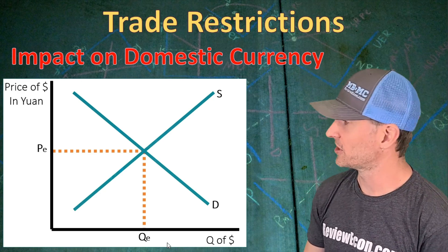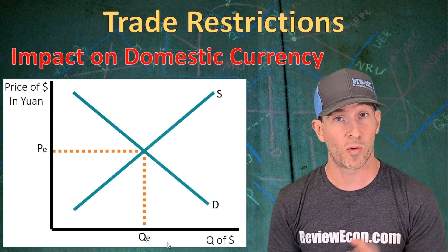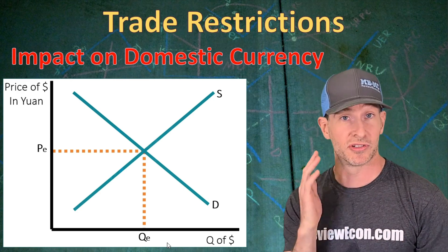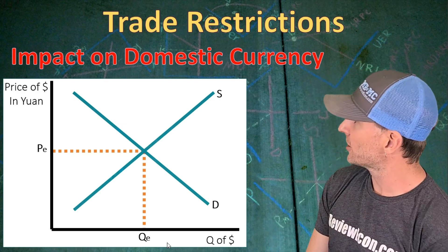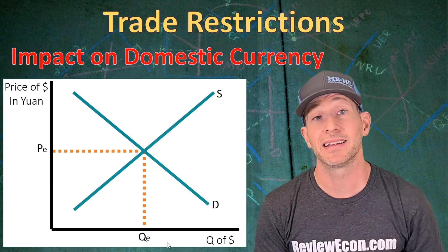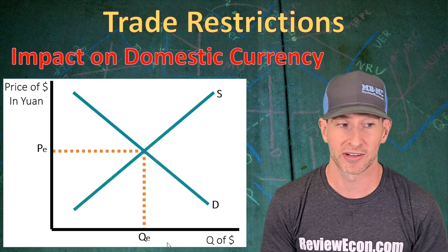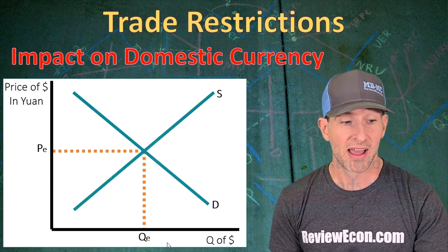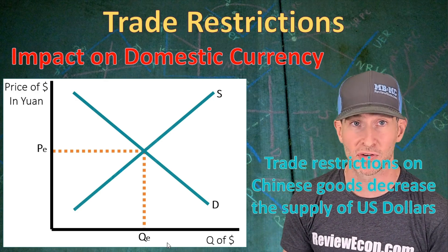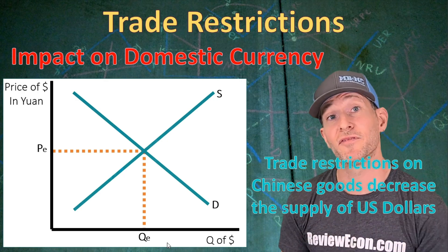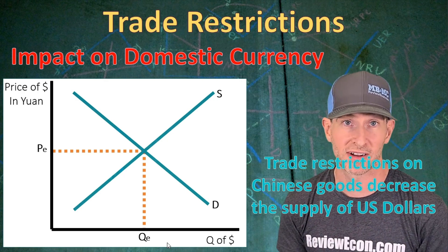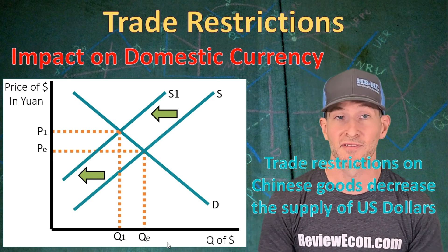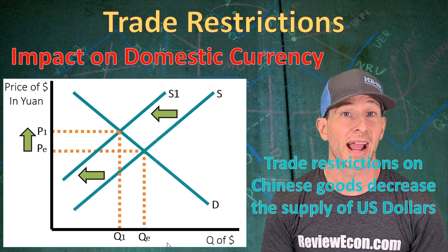Now let's take a look at the foreign exchange market for the US dollar. The x-axis is marked as the quantity of US dollars, and the y-axis shows the price of US dollars in Chinese yuan — the yuan to US dollar exchange rate. We have an upward sloping supply curve and a downward sloping demand curve with our equilibrium quantity and exchange rate marked. If we see an increase in trade restrictions on Chinese-made goods in the United States, that will cause a decrease in the amount of imports from China. That decrease in imports is going to decrease the supply of US dollars, because US consumers are buying fewer Chinese-made goods and therefore selling fewer of their dollars. That will shift the supply curve to the left, giving us an increase in the exchange rate — the US dollar has appreciated.